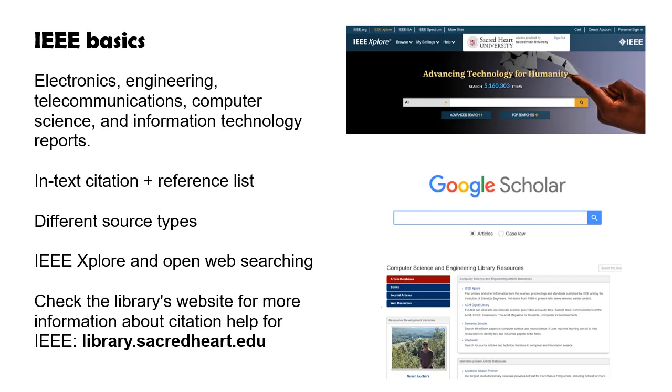With IEEE, you create an in-text citation and a reference list at the end of your paper. You will likely need to cite various source types like academic journal articles, conference proceedings, patents, reports, and others.